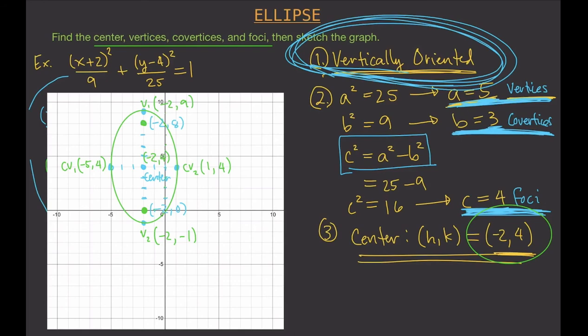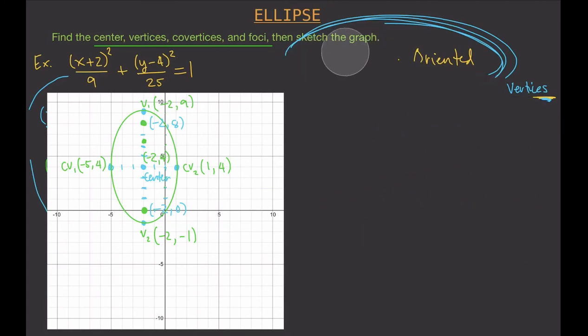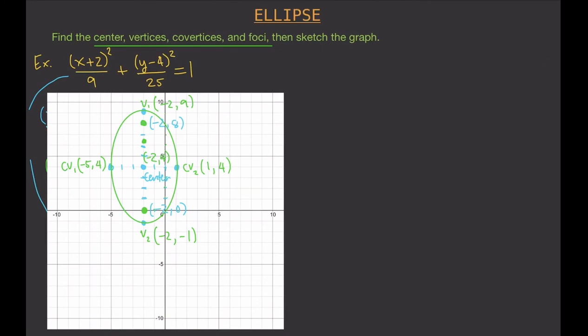If the coordinates are hard to read off the graph, we can use formulas. Since we have two orientations, there are two sets of formulas. For a vertically oriented ellipse: vertices are (h, k ± a), co-vertices are (h ± b, k), and foci are (h, k ± c).